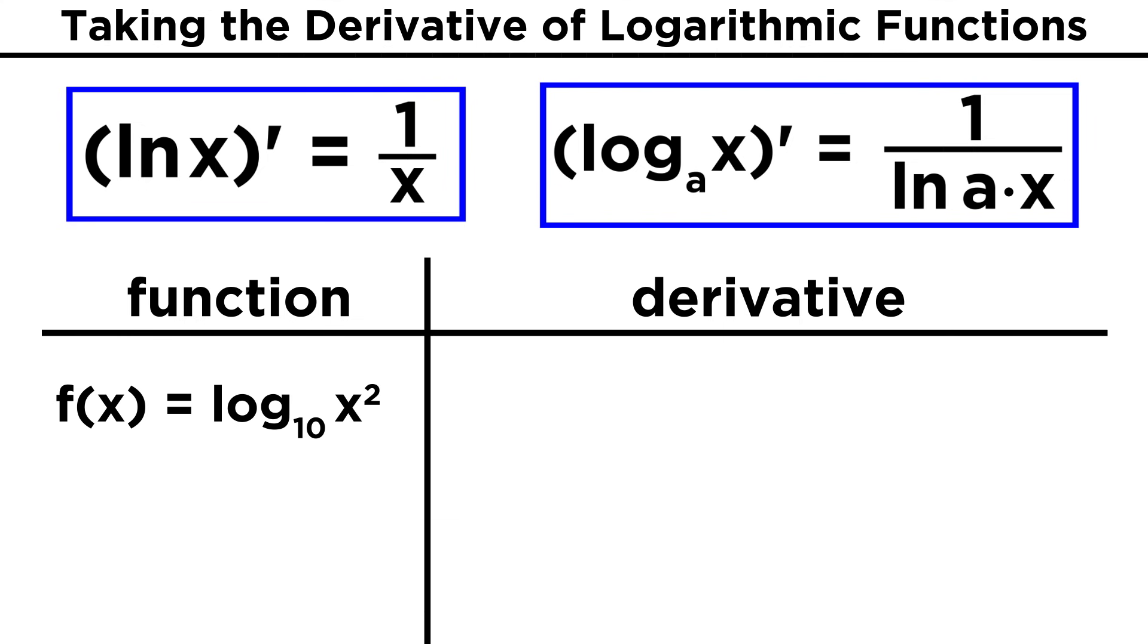Now what about finding the derivative of log base ten of X squared? Again, we need the chain rule. We know that the derivative of the log of base ten of something will be one over the natural log of ten times whatever was in the parentheses. So we get one over the natural log of ten times X squared.